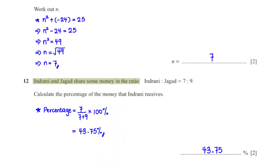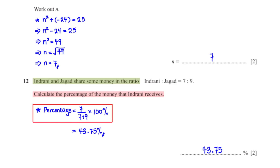Indrani and Jagad share some money in the ratio Indrani : Jagad = 7 : 9. Calculate the percentage of the money that Indrani receives. We divide Indrani's share (7) by the total ratio (7 + 9) and multiply by 100%, giving 43.75%.